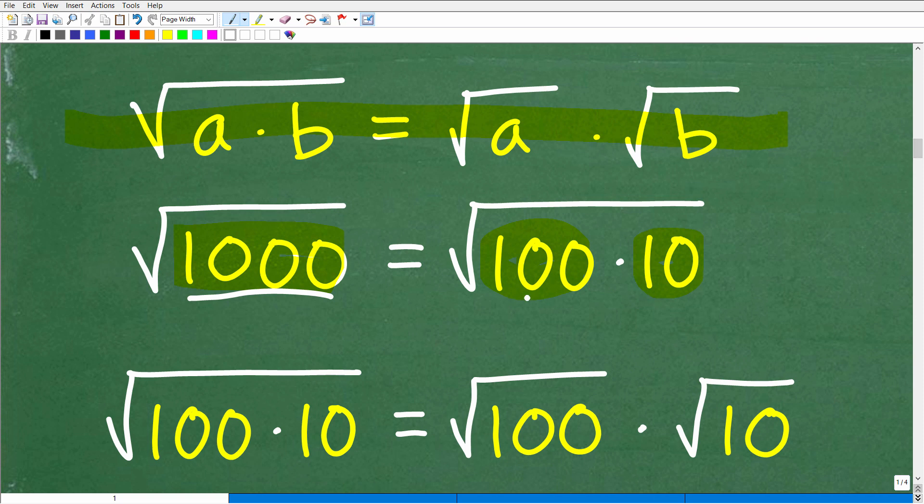Again, now here, 100 is the largest perfect square factor that can fit into 1,000 here, that we can find. At least, I'm pretty sure I am correct when I say that. But nevertheless, here's the thing, you could use other perfect square factors and it would still reduce down, your final answer still would be the same.